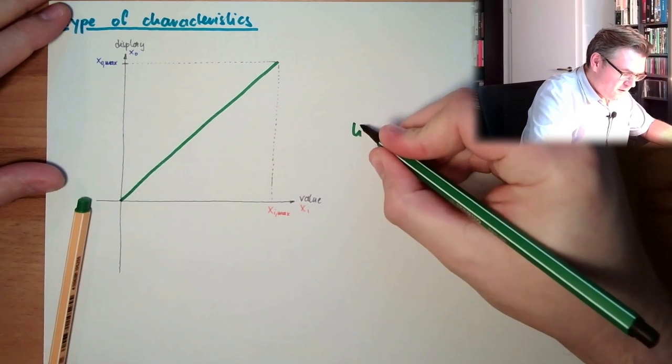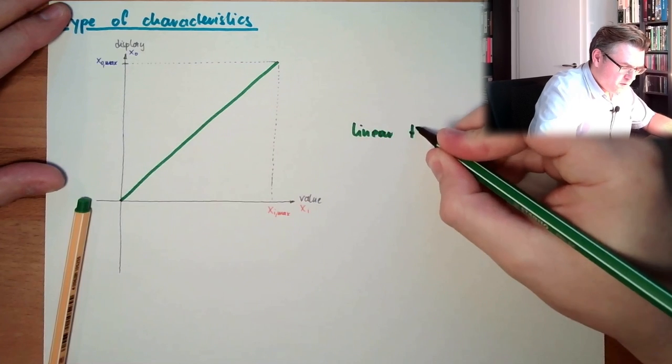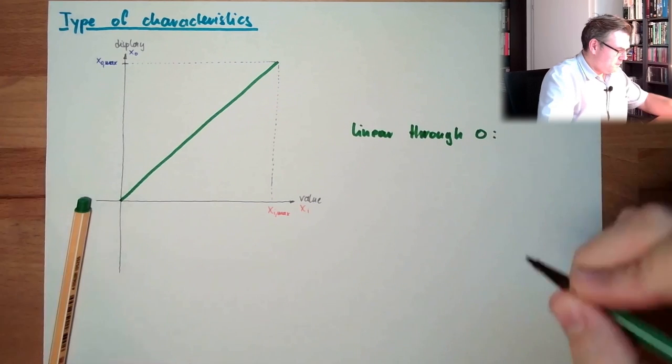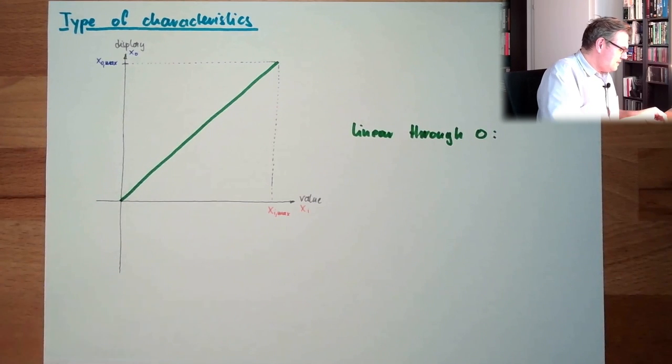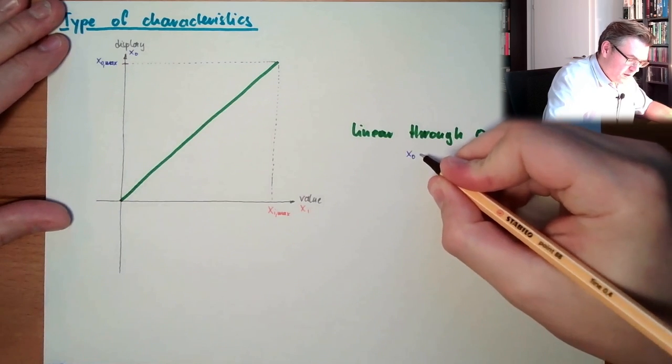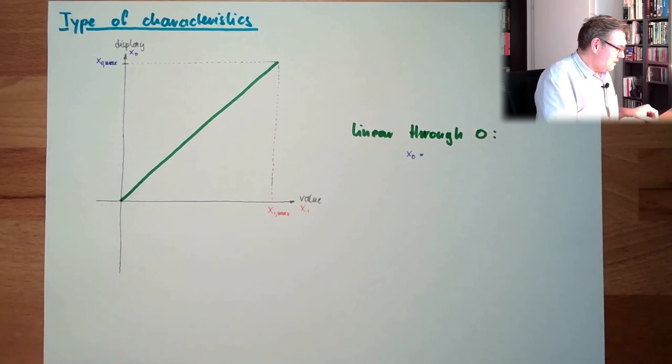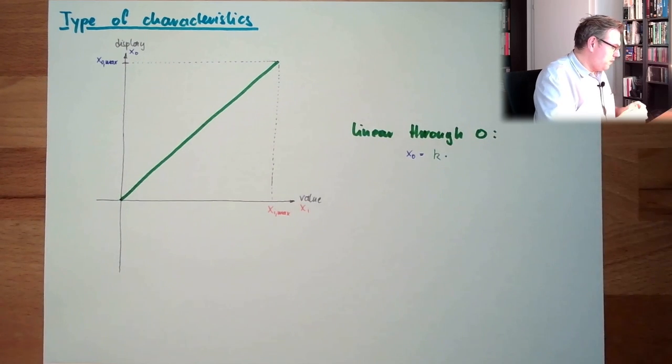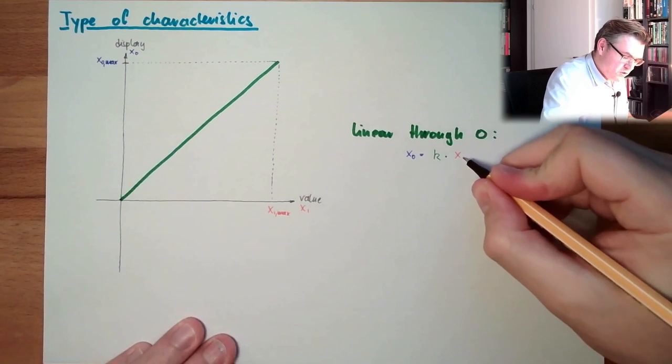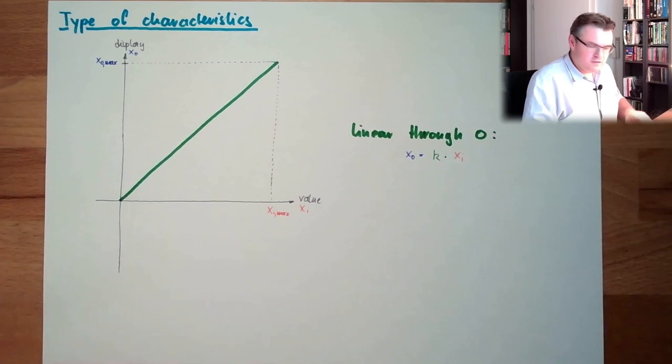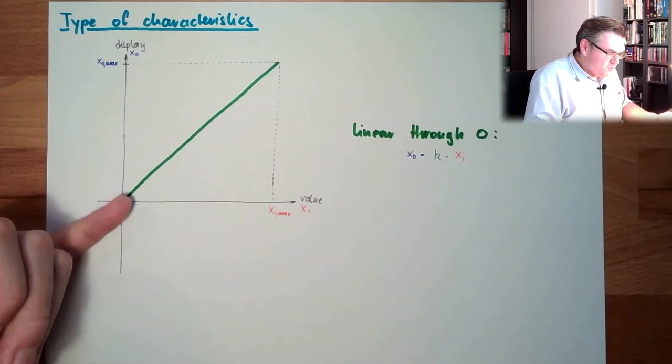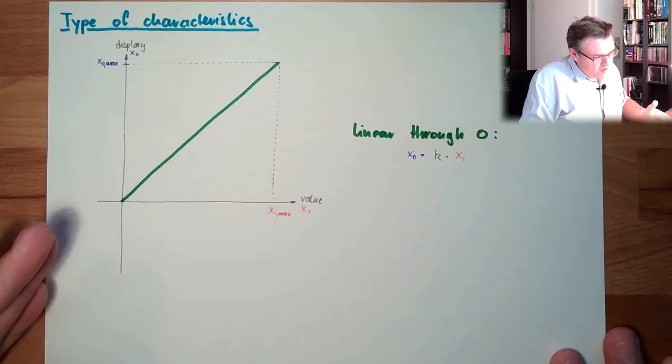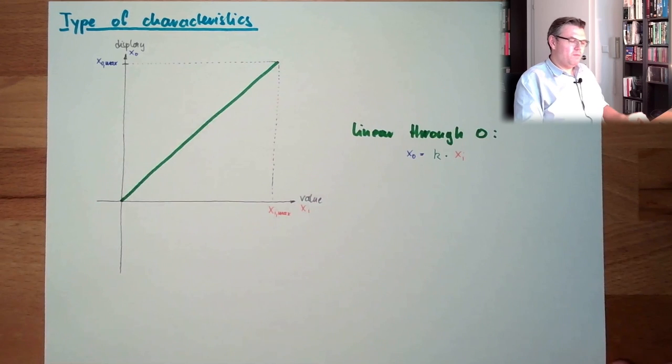So this is linear through zero. And in this case, the output XO equals the K multiplied by the input XI. This is the equation of this linear equation, we're going through zero, so this means no offset, and there's just, the sensitivity is always like K, everywhere is the same sensitivity. I mean, it's very obvious.